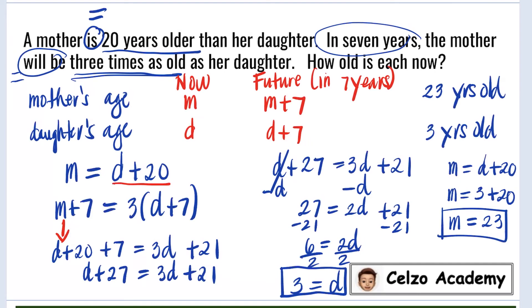Let's check if it satisfies both statements. If the mother is 23 years old now, and the daughter is 3 years old, then it satisfies the first statement. That the mother is 20 years older than the daughter. Let's check the second statement. In 7 years, mother's age will be 30, and daughter's age will be 10. And yes, it is true that 30 is 3 times the 10.